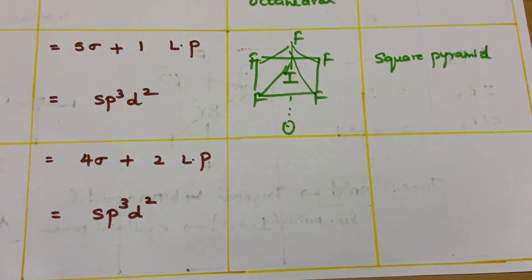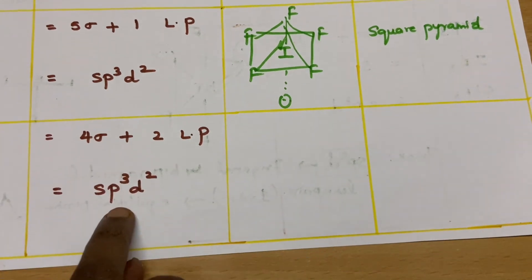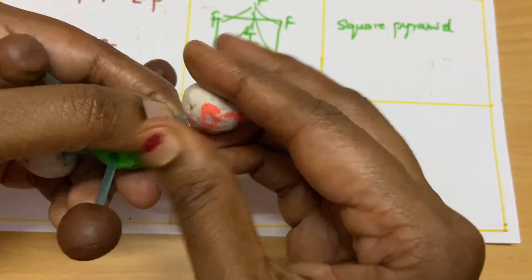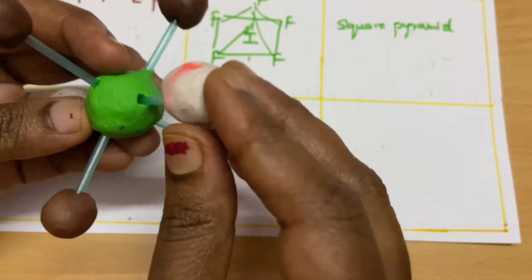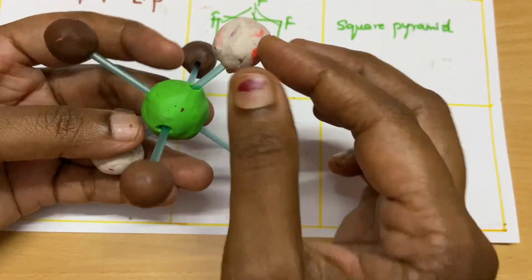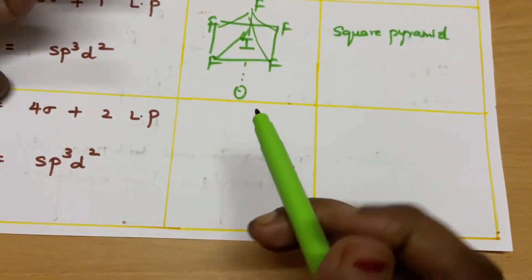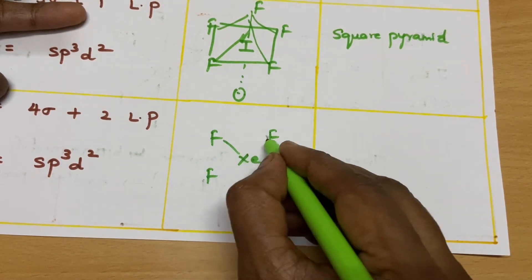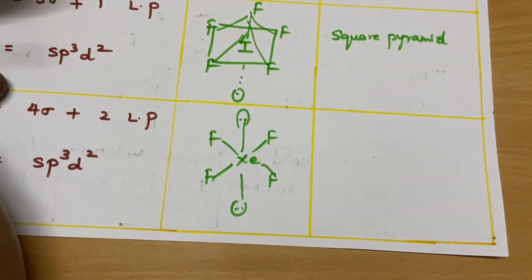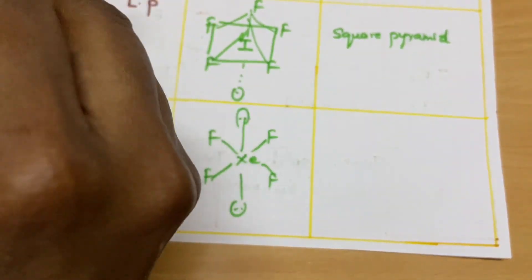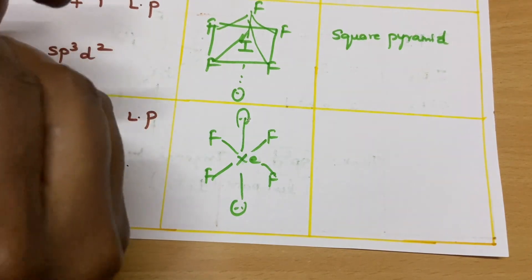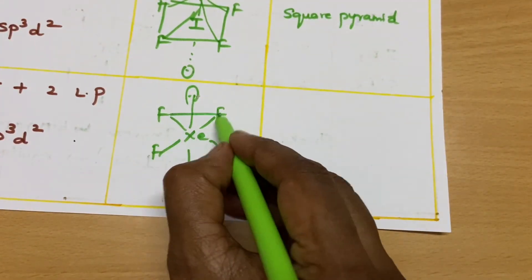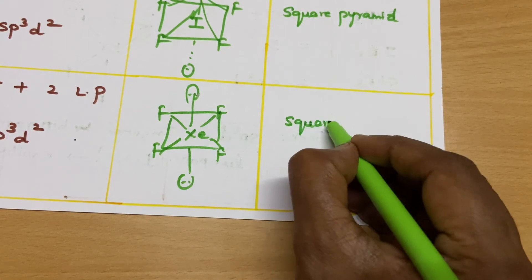For XeF₄, there are four sigma bonds and two lone pairs — also SP3D2, octahedral geometry. Since all positions are equal, the two lone pairs are placed opposite each other. Ignoring the two lone pairs, the remaining four fluorine atoms form a square. The shape is square planar. Since all bond angles are equal, regardless of which positions you use for the lone pairs, you will get the same square planar shape.